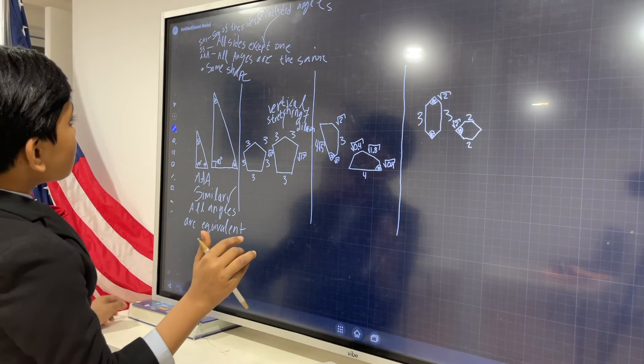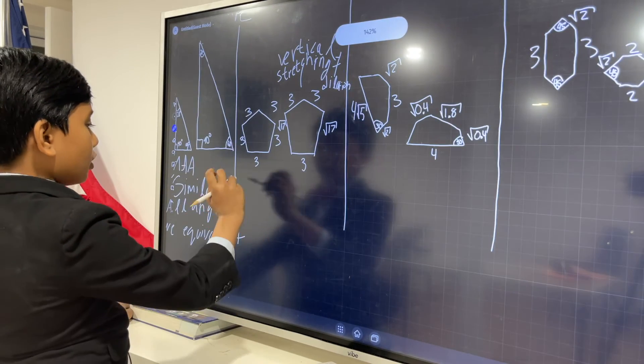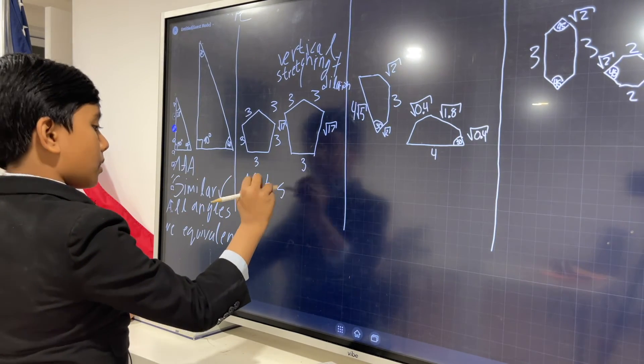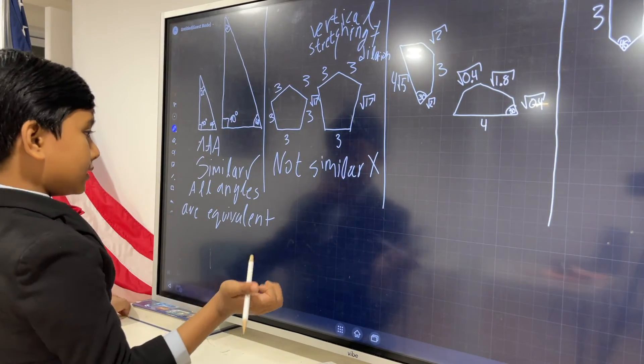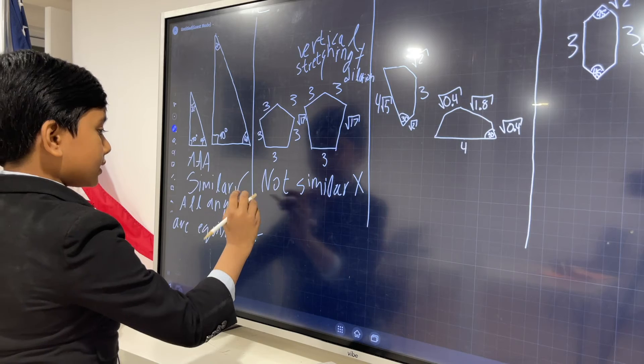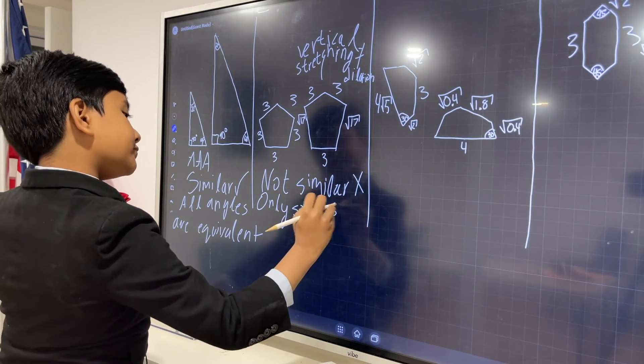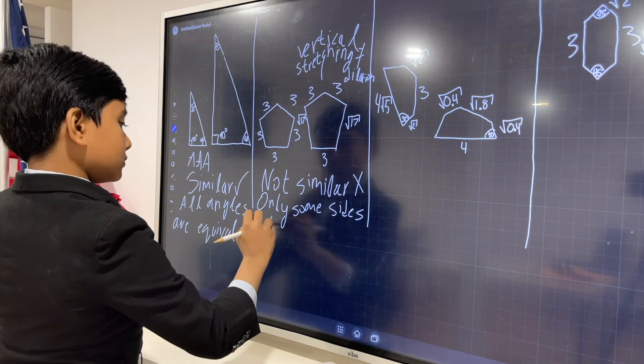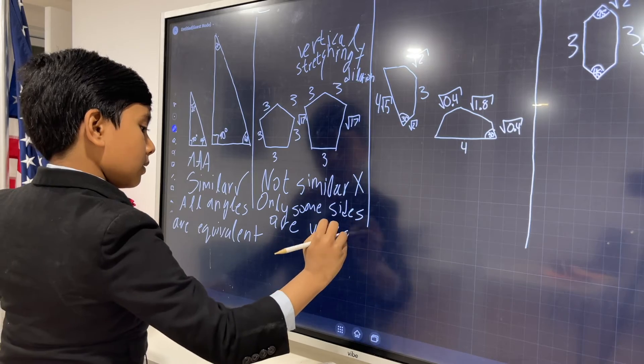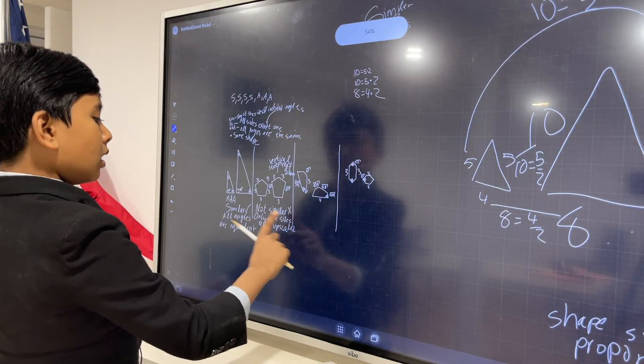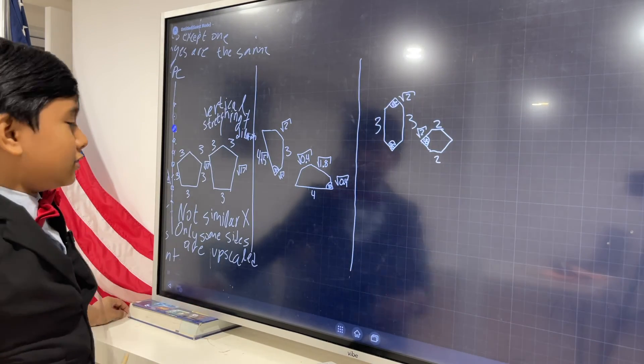If you try and scale one down, it won't be equal to the other. So vertical stretching is done by taking some of the sides and enlarging them, but keeping some of the other sides the same. That's not what dilation does. Dilation scales all the sides by a certain factor. So we know that these are not similar because, as I said before, only some sides are upscaled.